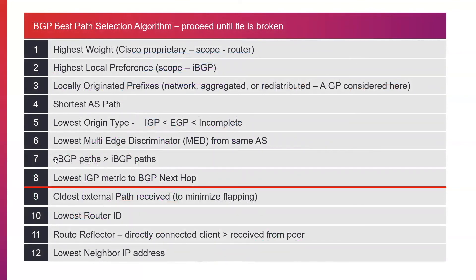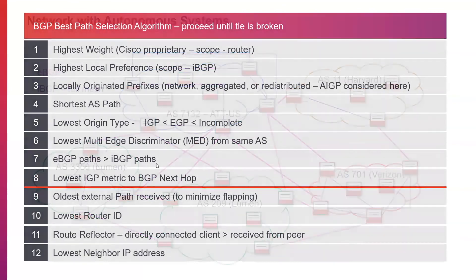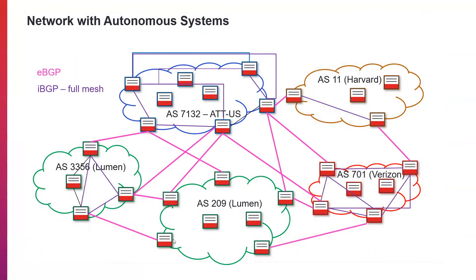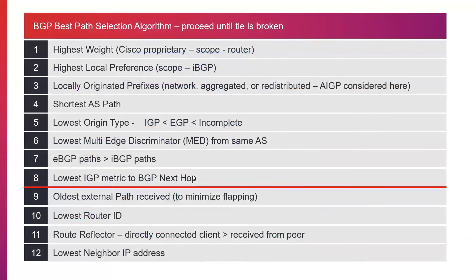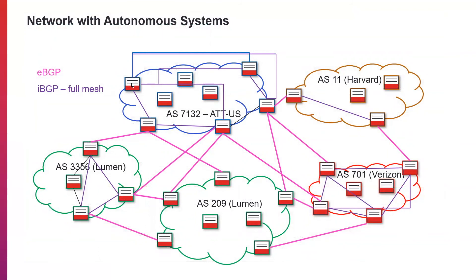The next step is that EBGP paths are preferred over IBGP paths. Say this router wants to go to a route in AS 209 — it will learn this route from its EBGP neighbor, but it may also learn it from its IBGP neighbor. We want to prefer the EBGP route because it's the next hop; we don't want to go to an IBGP peer to forward traffic when we can forward it directly. After that, the next criterion is the lowest IGP metric to the BGP next hop — whichever border router is closer by IGP cost is preferred as the next hop.